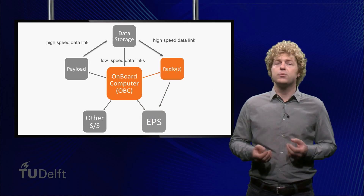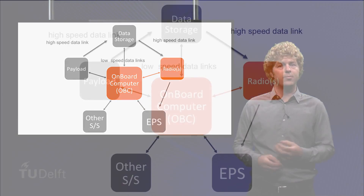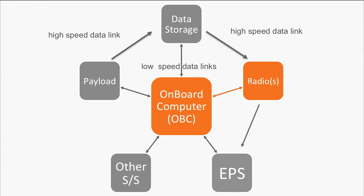For very small satellites, this low-speed radio is sometimes the only one and housekeeping data and payload data is combined. For most large satellites, however, the payload delivers a large amount of data. The payload delivers this data via a high-speed data link to a dedicated storage system.